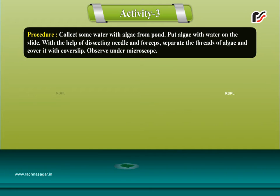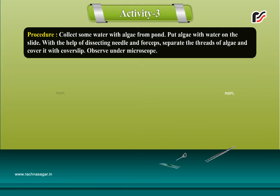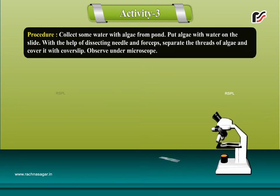Procedure: Collect some water with algae from pond. Put algae with water on the slide. With the help of dissecting needle and forceps, separate the threads of algae and cover it with coverslip.